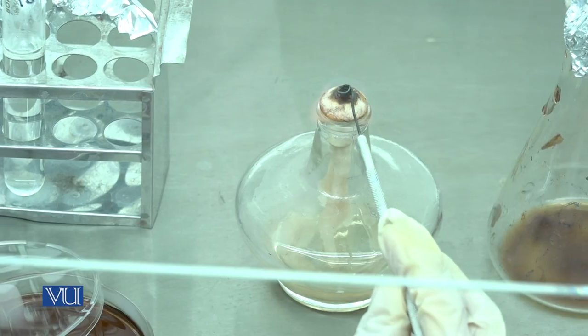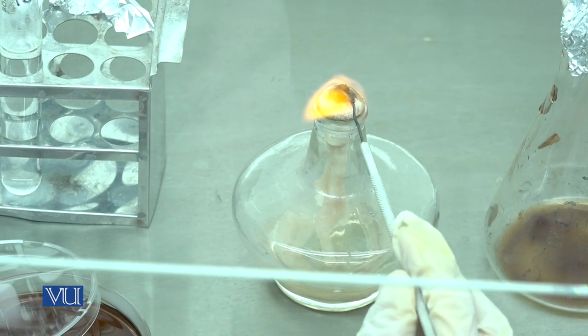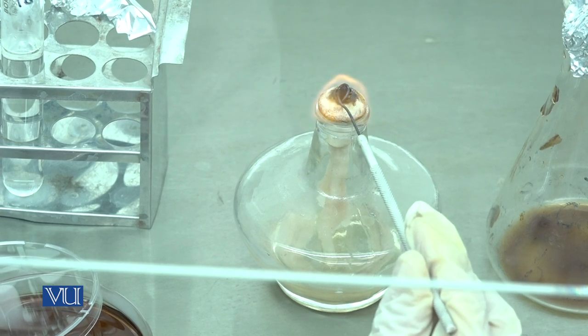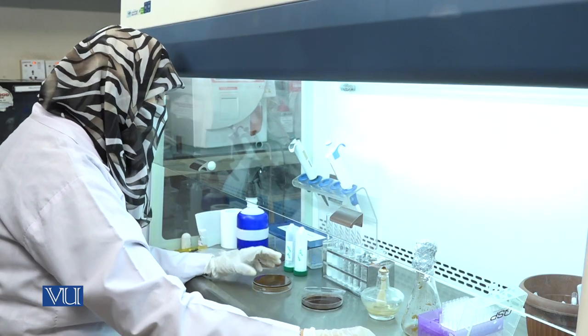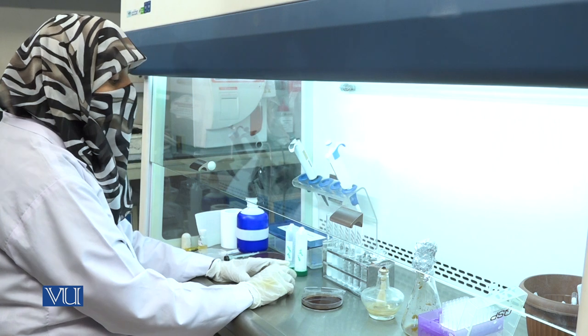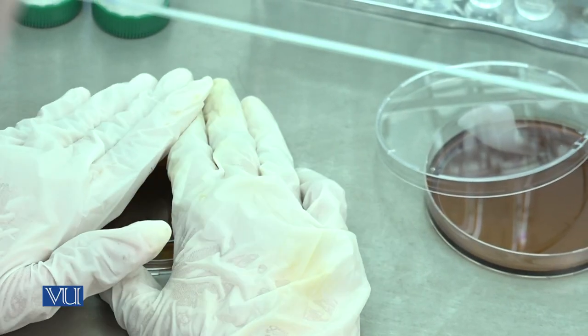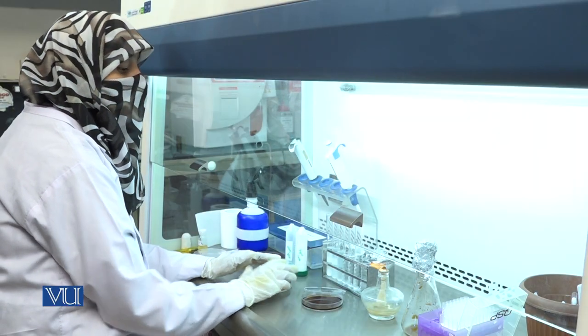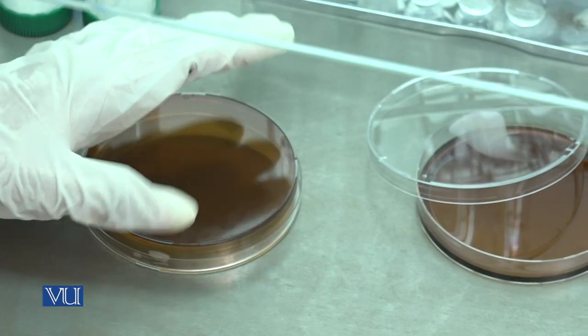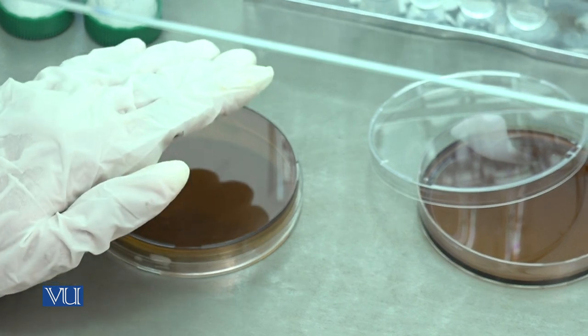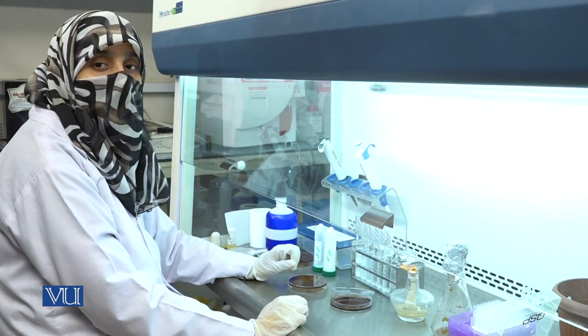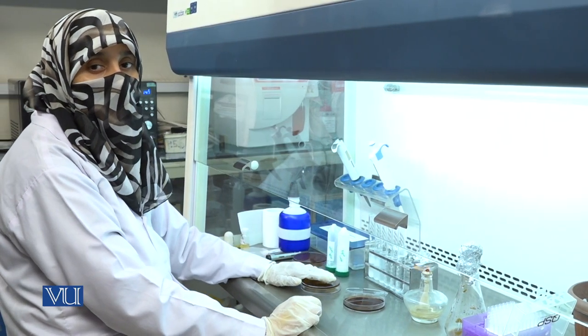After the completion of inoculation, again flame the inoculating loop. Now place the inoculated plate in an incubator overnight or for 48 hours. After incubation, we will observe Lactobacillus species and count colonies with the help of colony counter.